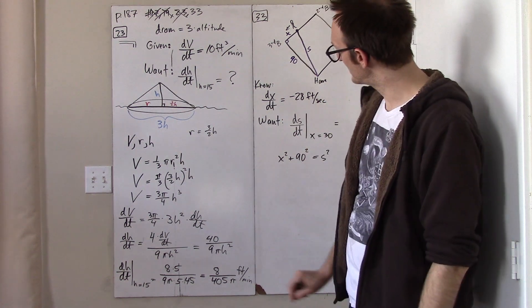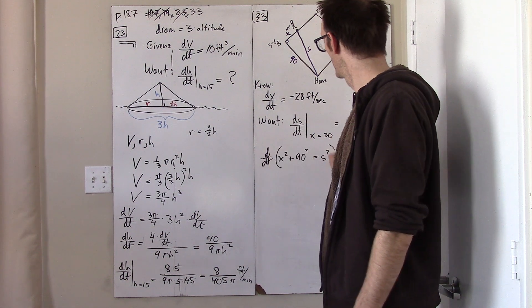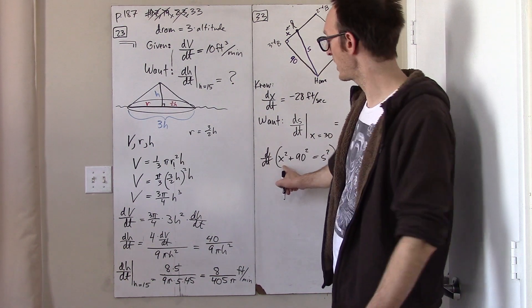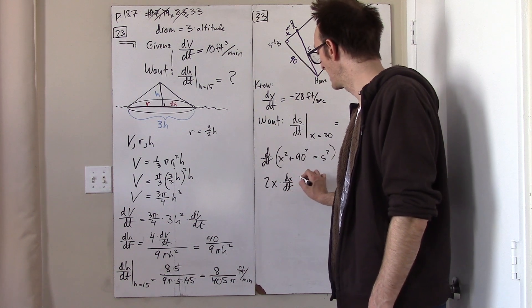Sprinkle some magic calculus pixie dust on this equation by taking the derivative of both sides with respect to t. Here you use the chain rule.